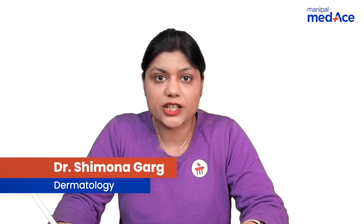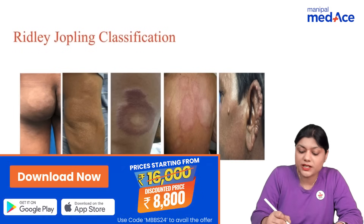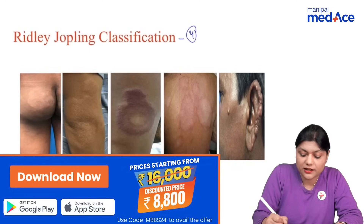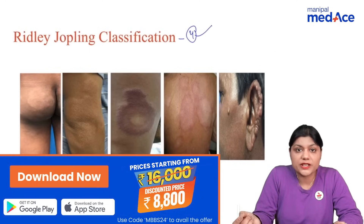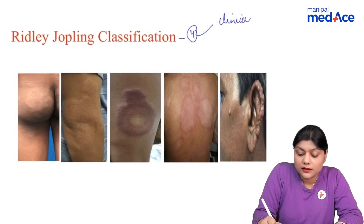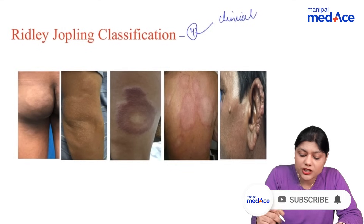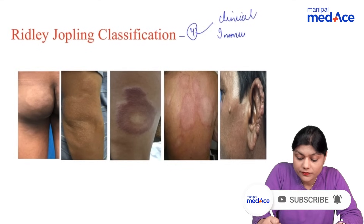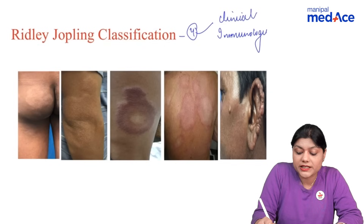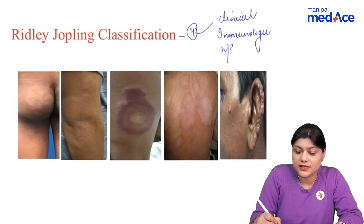Ridley-Joplin classification for leprosy is based upon four criteria: clinical features (clinical criteria), the body's immune response (immunological criteria), histopathological criteria, and bacteriological criteria detected by slit skin smear (SSS).